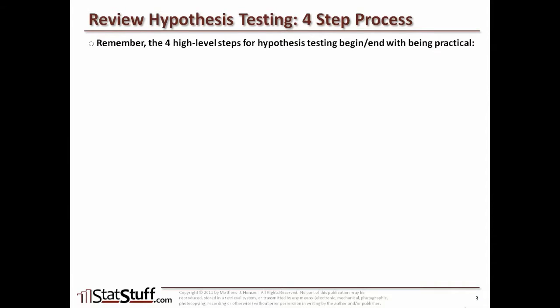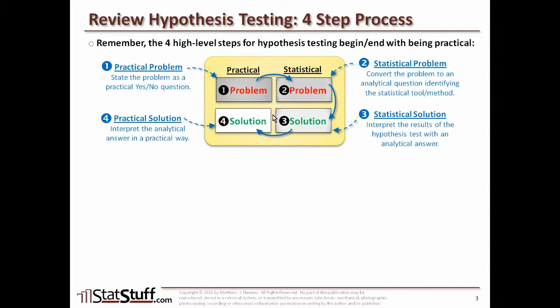Let's review again the various steps we follow when doing hypothesis testing. On a high level, the steps begin with a four-step process: starting with a practical problem, stating it as a yes or no question, converting it into a statistical problem to figure out which statistical tool to use, then applying that tool and interpreting the results. From that analytical answer we interpret a practical solution that makes sense to us.